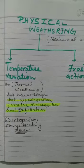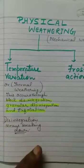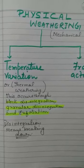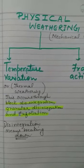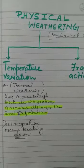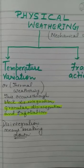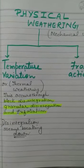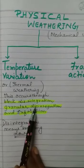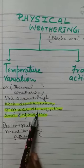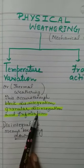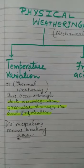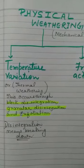Block disintegration: due to high daily range of temperature, rocks expand during daytime and contract at night, leading to the rocks breaking up into blocks. This is called block disintegration. In the plateau and desert regions, generally rocks expand during daytime and contract at night, leading to the rocks breaking up into blocks.